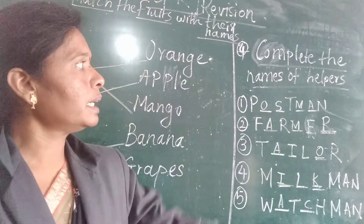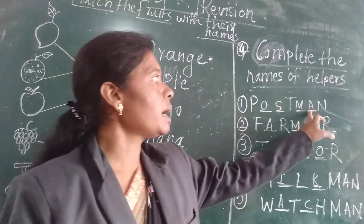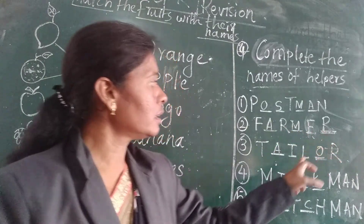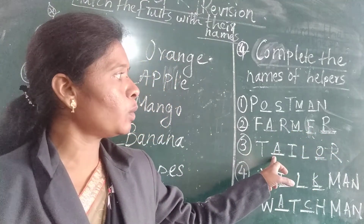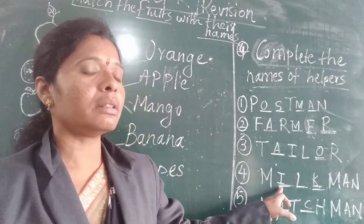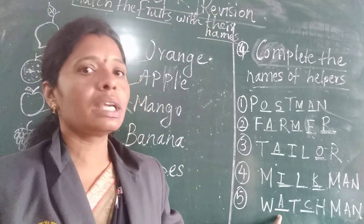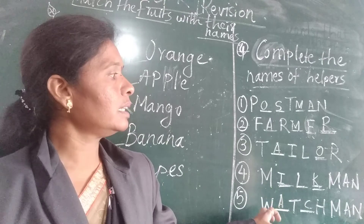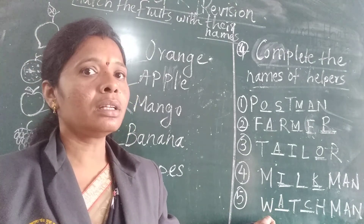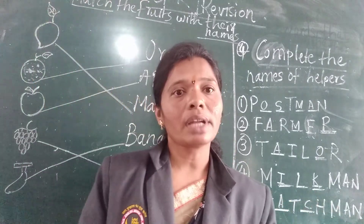Once again we repeat. P-O-S-T man — postman. F-A-R-M-E-R farmer. T-A-I-L-O-R tailor. M-I-L-K-M-A-N milkman. W-A-T-C-H-M-A-N watchman. Like this you have to learn the spelling and fill in the word — complete the word and write it down. You have to complete the spelling. Understood.